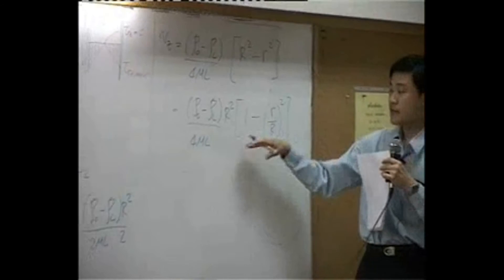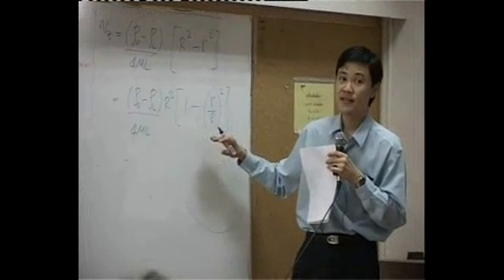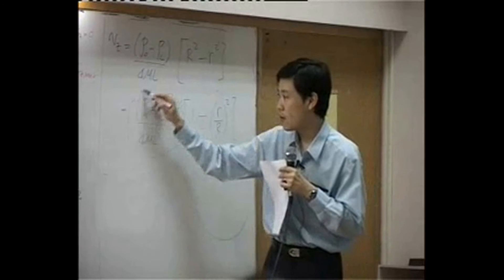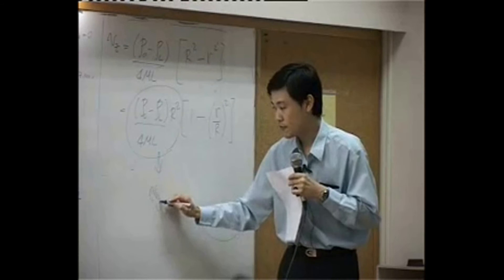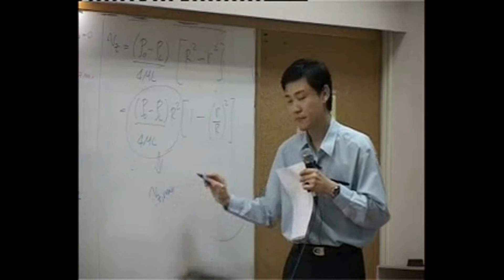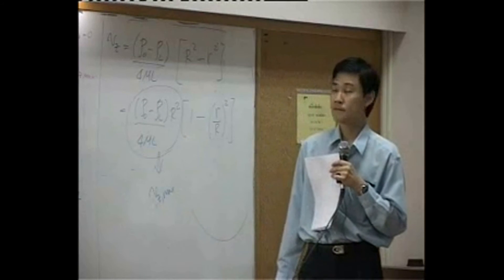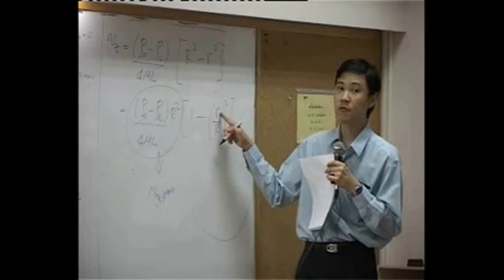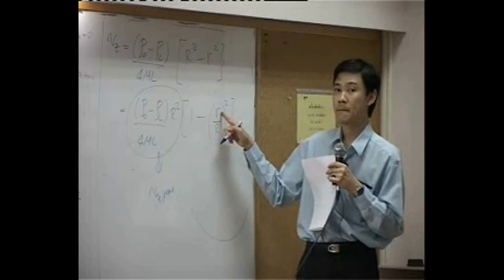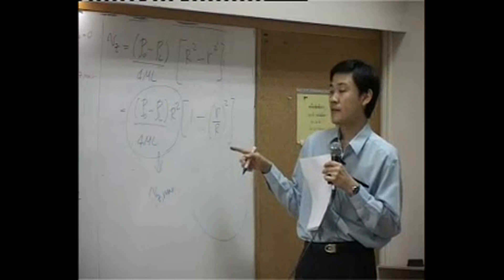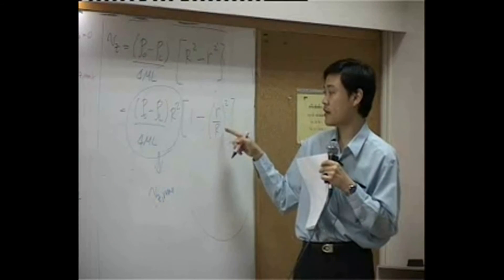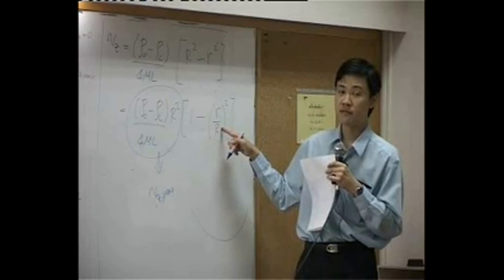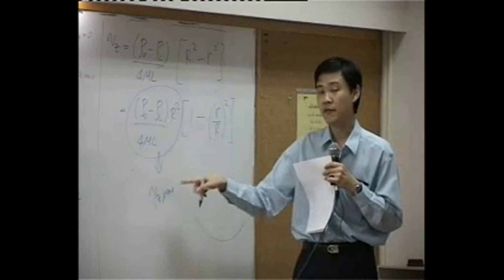By doing this kind of rearrangement, you can see right away that the whole term here would equal to vz maximum, because it will be maximum at r equal to zero. And vz would turn to be zero at r here equal to capital R. This one cancels, r becomes zero, everything becomes zero.